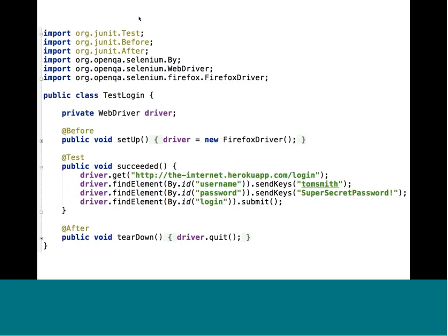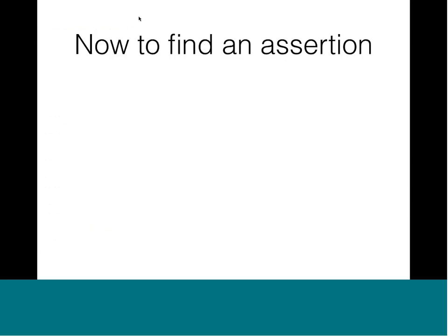Setup and teardown create and destroy an instance of Selenium — in this case using Firefox, which requires no additional setup out of the box. On top of each method are JUnit annotations: @Before makes the setup method run before each test, @After runs after each test, and @Test denotes that the succeeded method is a test. This is all well and good — we have our test code wired up — but it's not actually doing anything meaningful yet. It will just run and pass because there's no assertion.